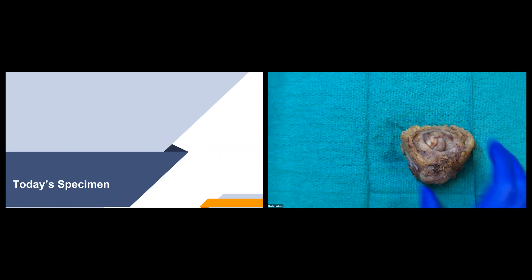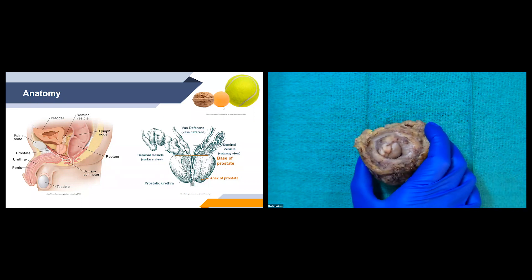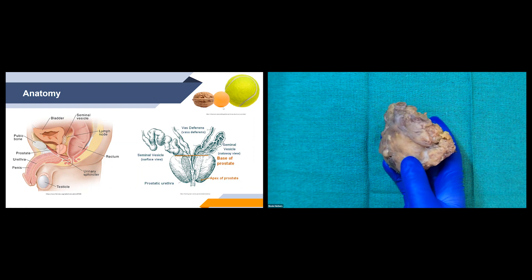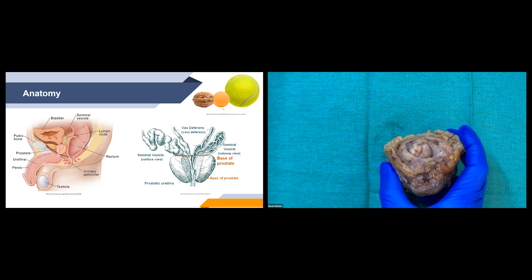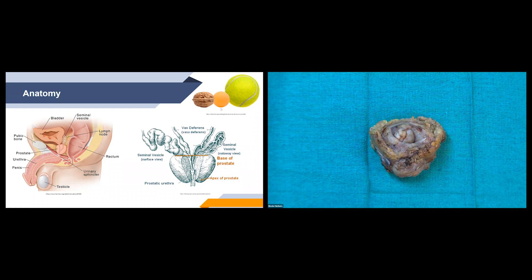The prostate is located in front of the rectum and lies directly inferior to the bladder. The normal size of a prostate in an adult man is about the size of a walnut. Here's an image showing a walnut in comparison to a ping pong ball, which is about the same size, and then in comparison to a tennis ball, which is quite a bit larger. Our specimen here is obviously a bit bigger than a walnut and closer to the size of about a small tennis ball.